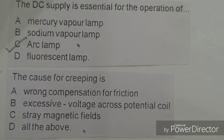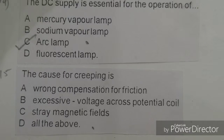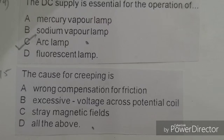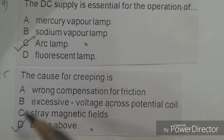Next objective: The cause for creeping is. Options given: wrong compensation of friction, excessive voltage across the potential coil, stray magnetic field, all of the above. The right answer is D, all of the above — wrong compensation of friction, excessive voltage, and stray magnetic field.